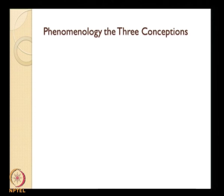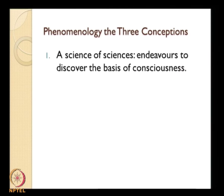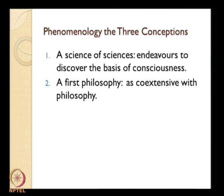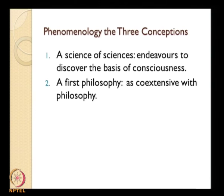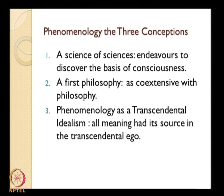There are basically three conceptions of phenomenology: first, as a science of sciences — the foundational science that discovers the basis of consciousness; second, as a first philosophy, coextensive with philosophy itself; and third, as transcendental idealism, where all meaning has its source in the transcendental ego. Husserl's ultimate aim is this domain of the transcendental ego and its pure contents.